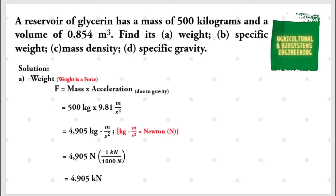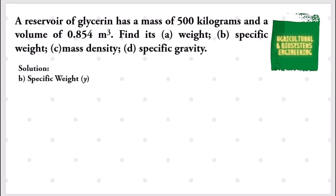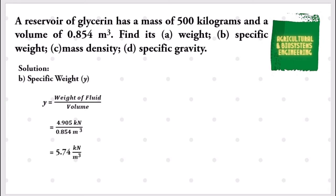Next, let us solve for the specific weight. The formula is: specific weight equals the weight of the fluid divided by the volume. We already solved for the weight of the fluid, so we substitute: 4.905 kilonewtons divided by 0.854 cubic meters. The answer is 5.74 kilonewtons per cubic meter.